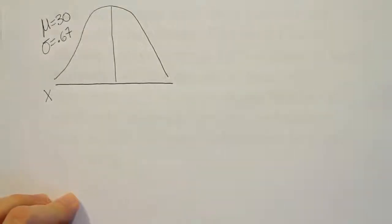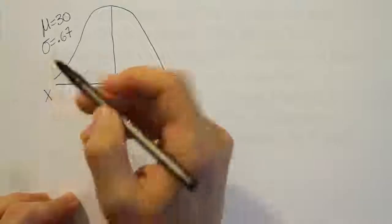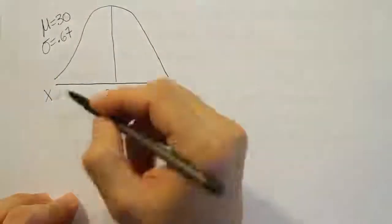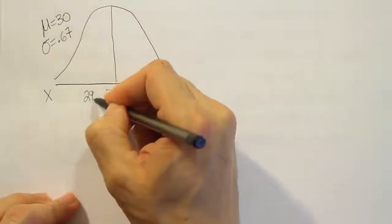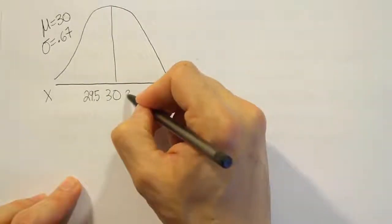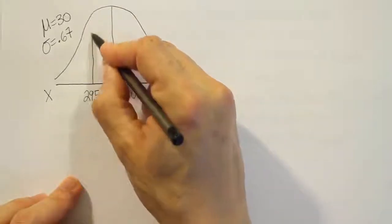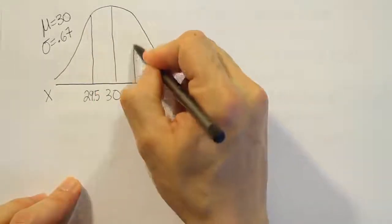They ask us the probability that its fuel economy is between 29.5 and 30.5. Remember, the mean is in the middle here at 30, so 29.5 is a little before that, and 30.5 is just a little bit after.